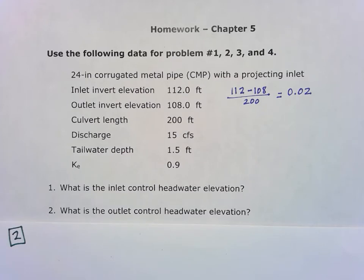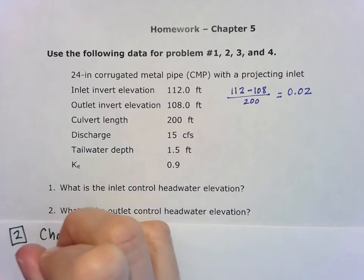All right, for Chapter 5 homework problem 2, we're going to find the outlet control headwater elevation. For this time we're going to have to use the outlet control charts, and so now we'll move to Chart 11.